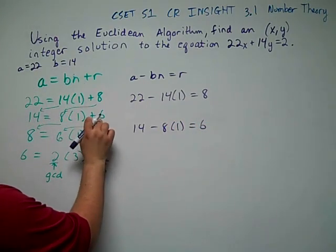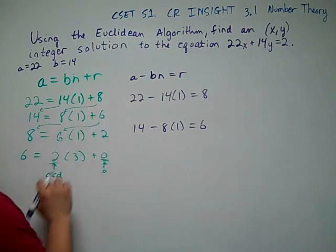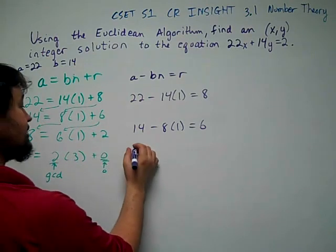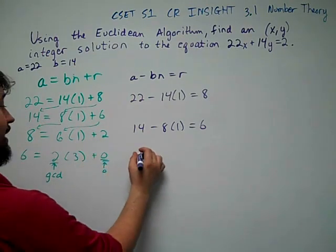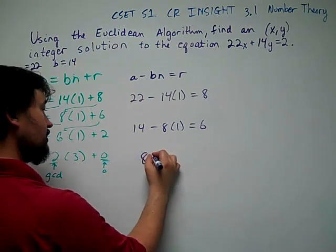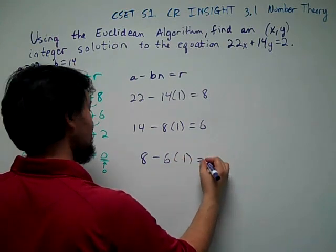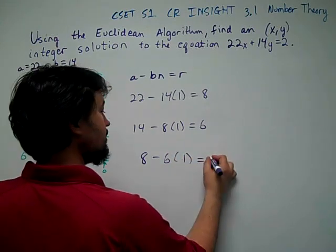I'm solving each one of these for the remainders. Solving this last one for the remainder, it's 8 minus 6 times 1 is 2.